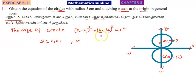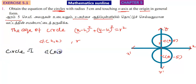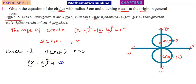Now we apply the formula. Circle one has center (0, 5) and radius 5. So the equation becomes: x minus 0, the whole square, plus y minus 5, the whole square, equal to r squared, which is 25.